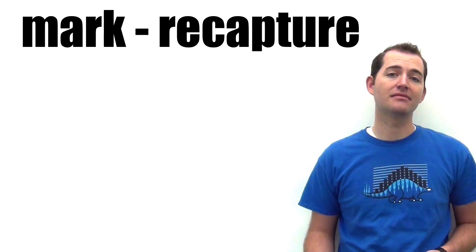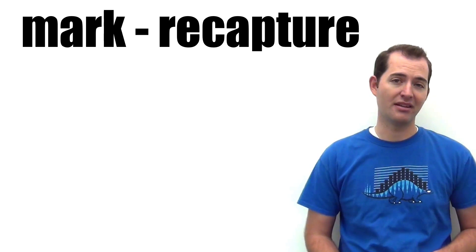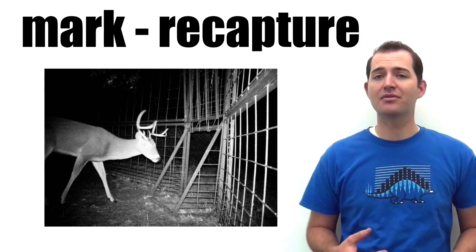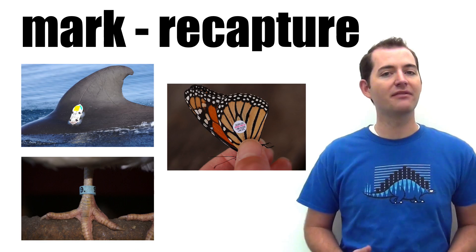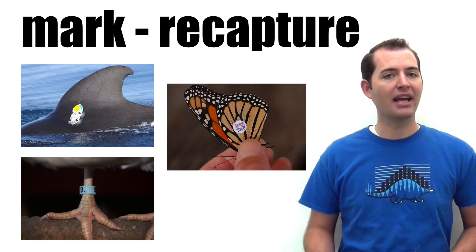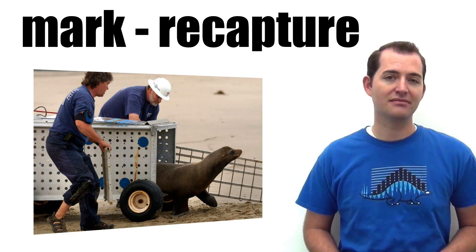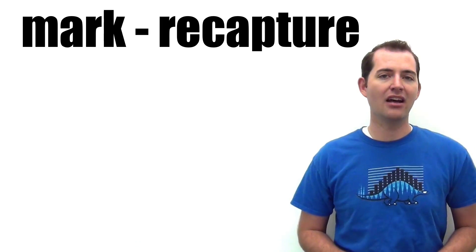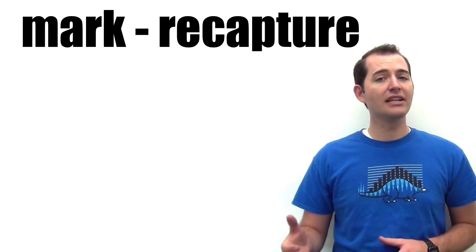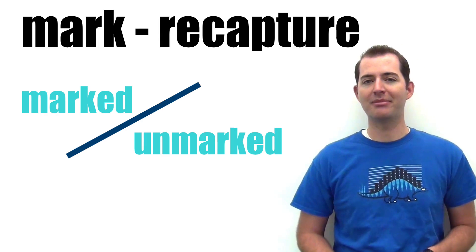The mark recapture method is usually used for species that are mobile. This method goes by several other names, one of which is the capture recapture method. Traps or other methods are used to capture animals. Once animals are captured, they are marked with a distinguishing feature such as a tag or a band. These animals are then released into the natural habitat and back into the population. Animals are then captured again on a random basis, and special note is taken of those that are marked. The ratio of those that are marked to those that are unmarked is then used to estimate the total size of the population.